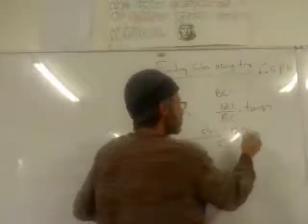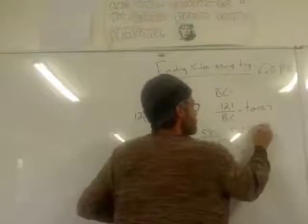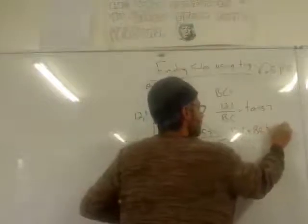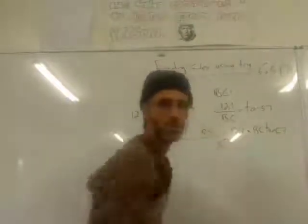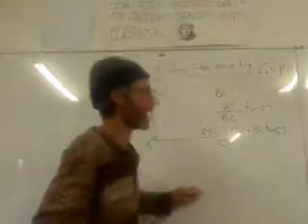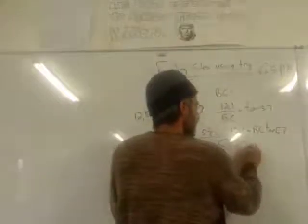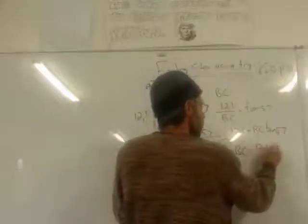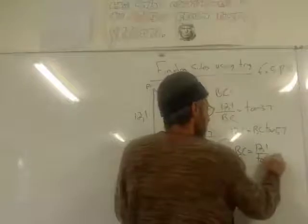12.1, you can see it, right? 12.1 equals BC tan 57. See it? And then you're going to push the tan to the other side. So we're going to divide by tan 57. So we're going to have BC equals 12.1 divided by tan 57.